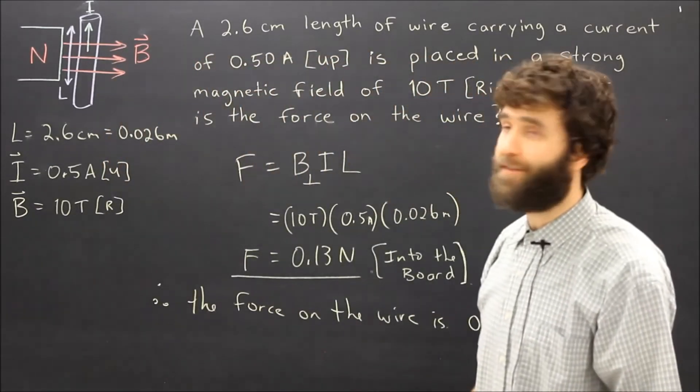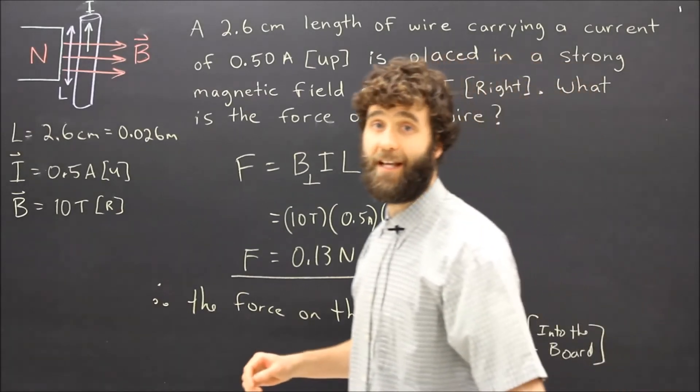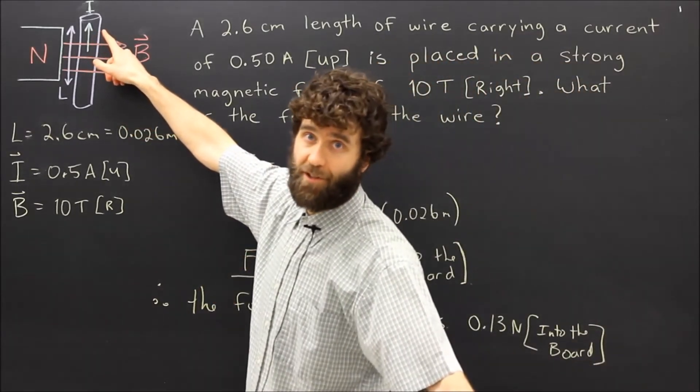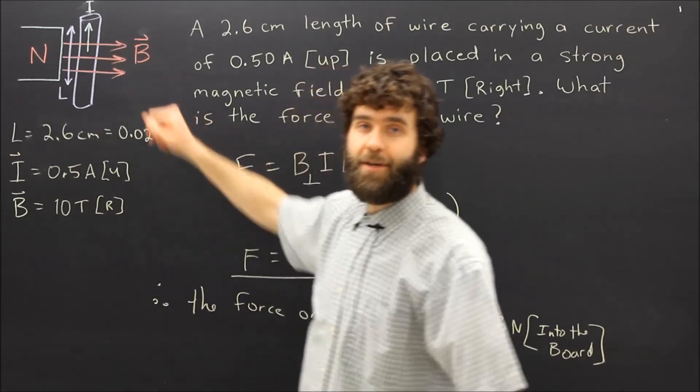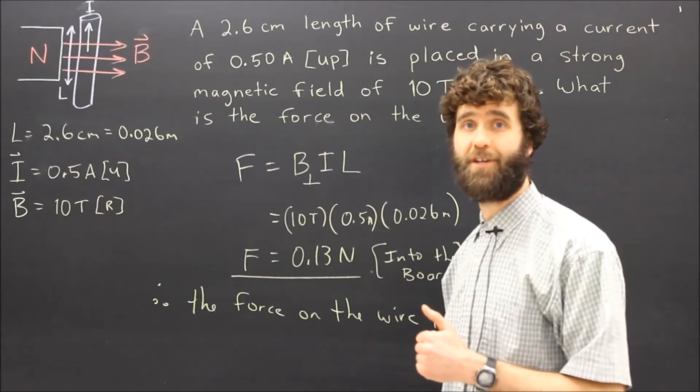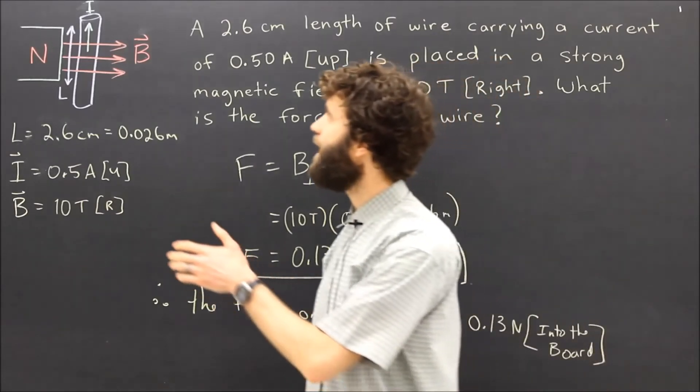Now, if you are using a different definition of current called the electron flow, the electron flow is the opposite direction of the conventional current. So electron flow would be down. We would then need to use our left hand rules to determine the direction of the force.